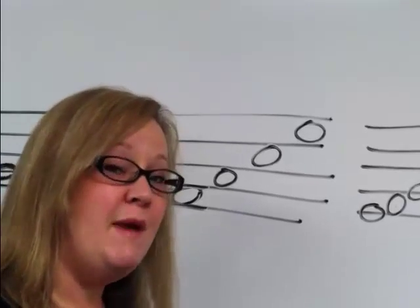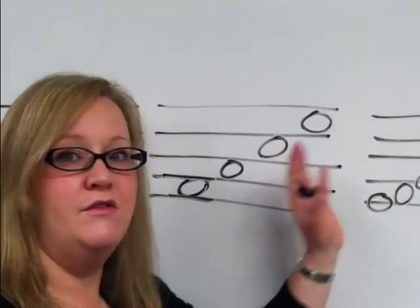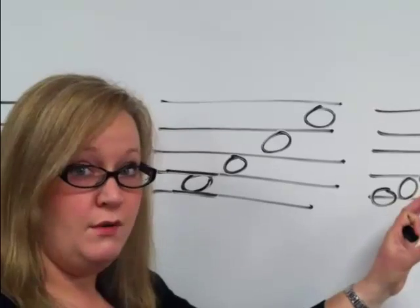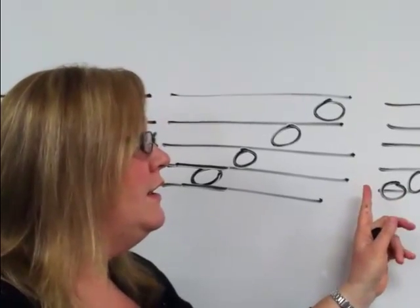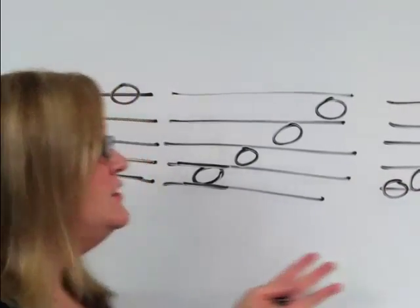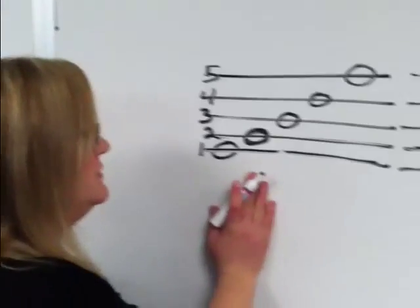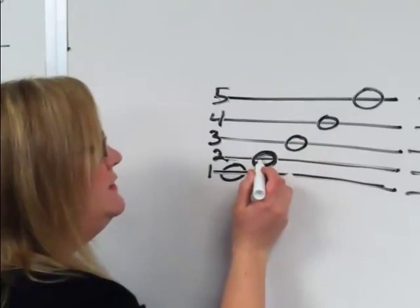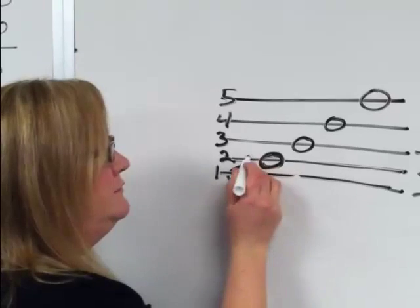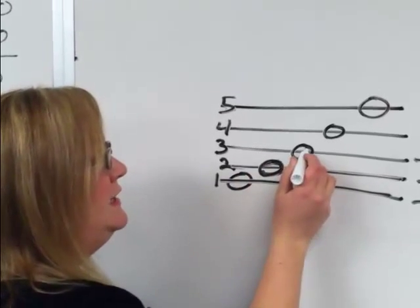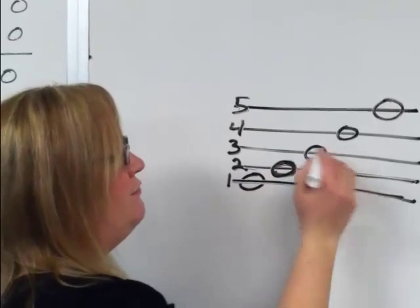So the thing that some people get confused about are when there are a lot of different notes going on and when they look different. So back to the line notes. This right here is line note one, line note two, and line note three. Let's take a look at line note three.